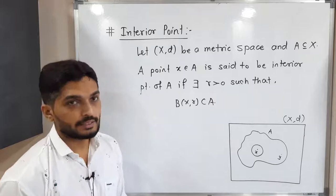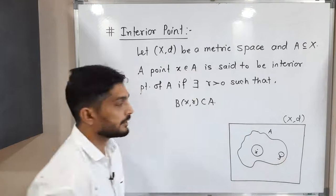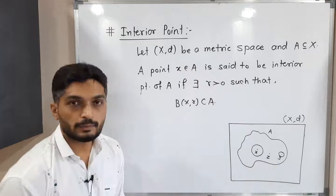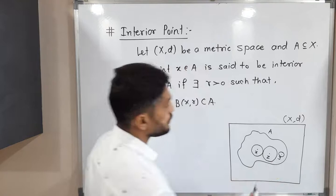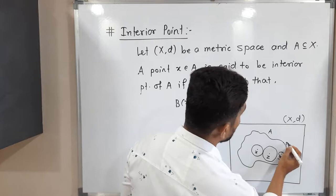If you have a point Y here, can we say Y is an interior point of A? Yes, definitely. Here also it is possible to find a ball around Y which is a subset of A, so Y is an interior point of A. If you have point Z, can we say it's an interior point of A? Yes, definitely — it is possible to find a ball around Z which is a subset of A, so Z is also an interior point of A.